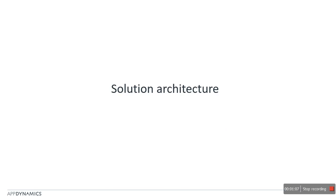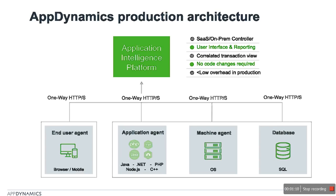Let's take a look at the solution architecture of AppDynamics. AppDynamics is built for production, but clients have found it useful in development and pre-production environments too. Its features like high scalability and low overhead make it the best choice for production. It has a simple two-part architecture: agents installed on your system that send data via one-way HTTPS to your controllers, and the front-end controller that aggregates all data slices and gives you a correlated view of your transactions.